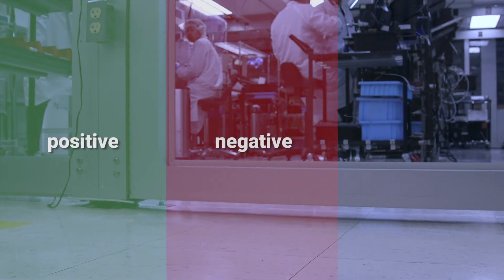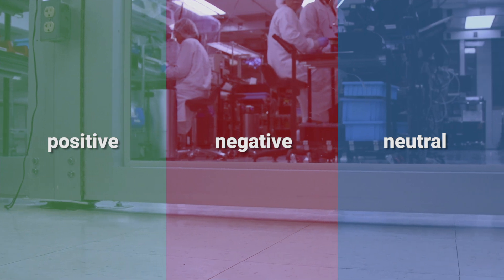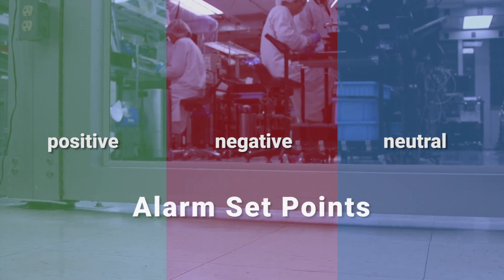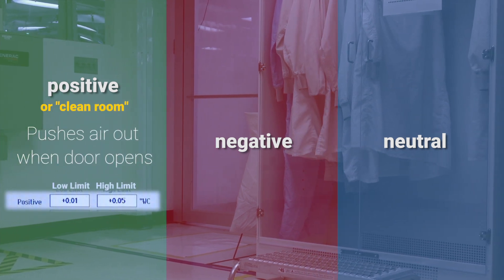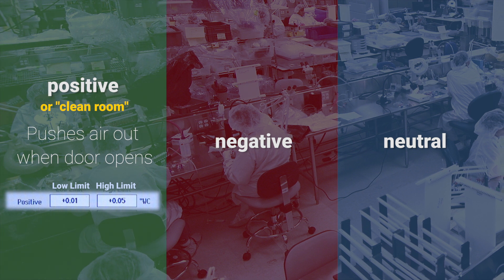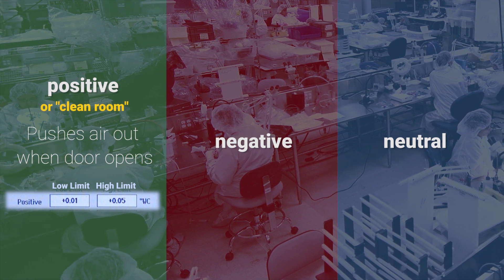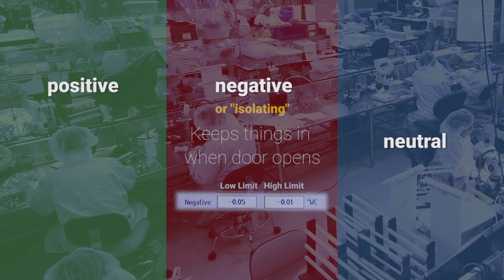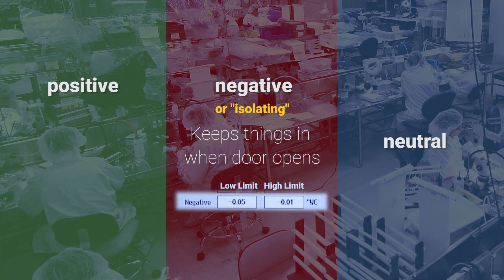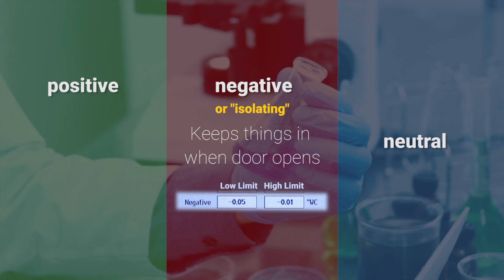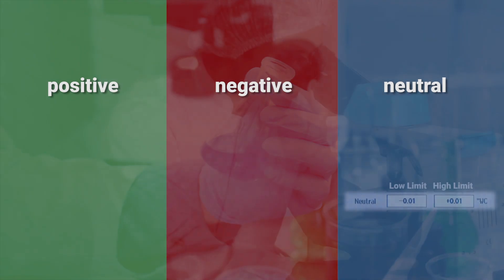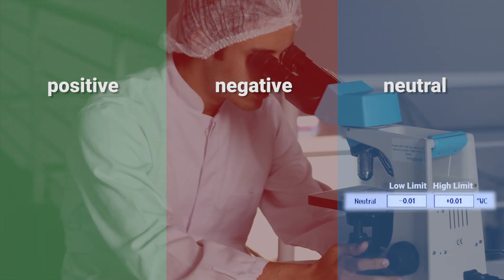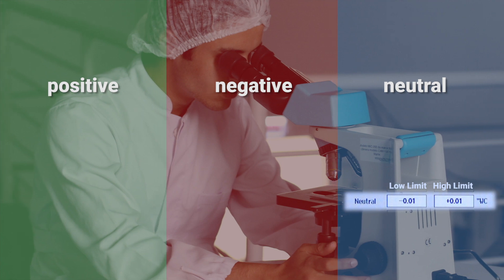For critical environments, the space being monitored can be a positive, negative, or neutral space. The user determines what kind of space is monitored with the alarm set points. A positive room will have an alarm set point slightly above zero differential pressure to some greater positive pressure. A negative pressure room will have alarm set points from less than zero differential pressure to a deeper negative pressure. A neutral room will have the high alarm set point in the positive pressure range and the low alarm set point will be a negative number.